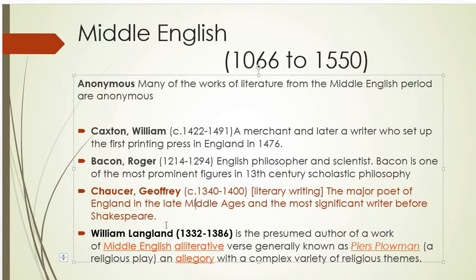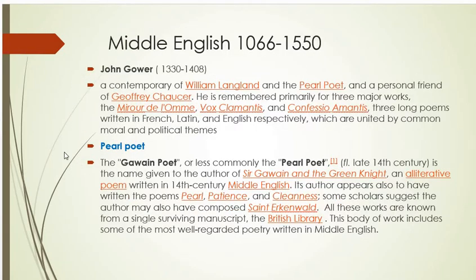Roger Bacon was an English philosopher and scientist, one of the most prominent figures of 13th century philosophy. Geoffrey Chaucer is called the Father of English Literature and the Father of English Poetry. William Langland is also a contemporary writer of Chaucer and is presumed author of Piers Plowman, a Middle English alliterative verse, a religious poem with complex variety of religious themes.